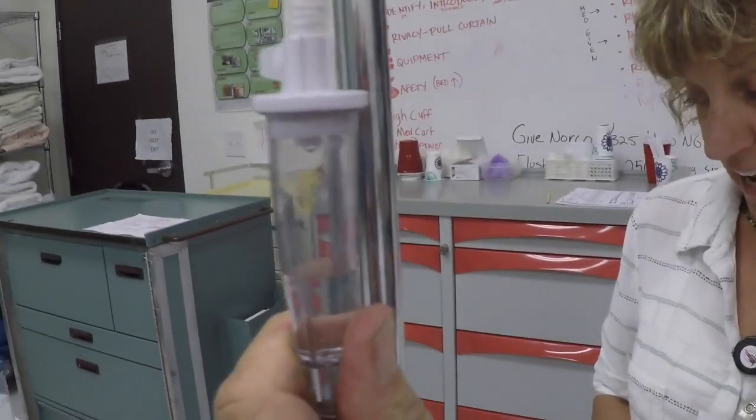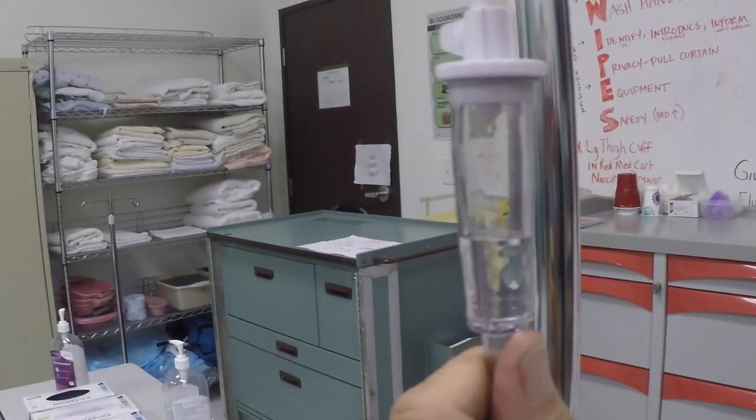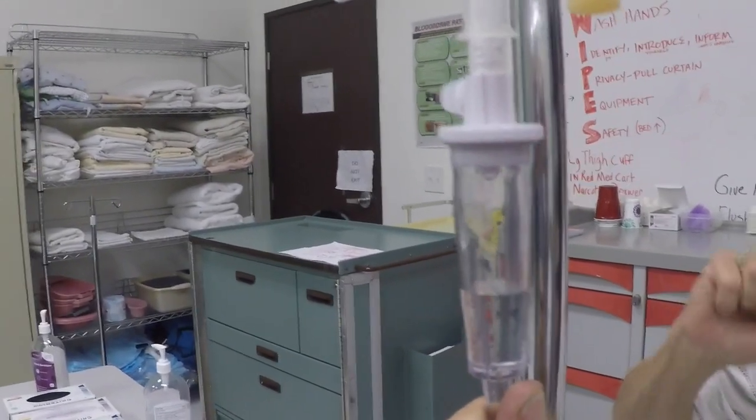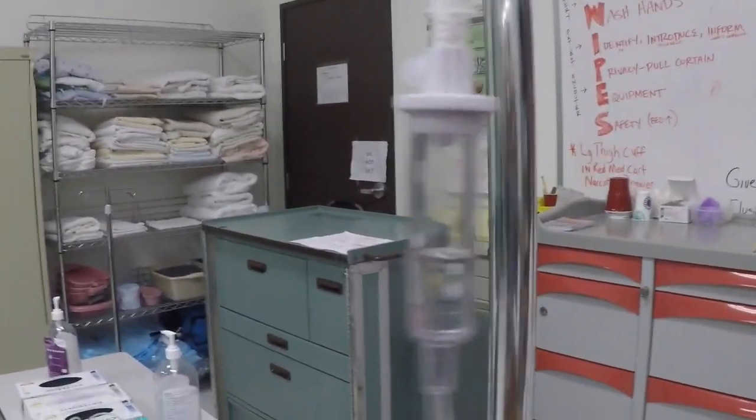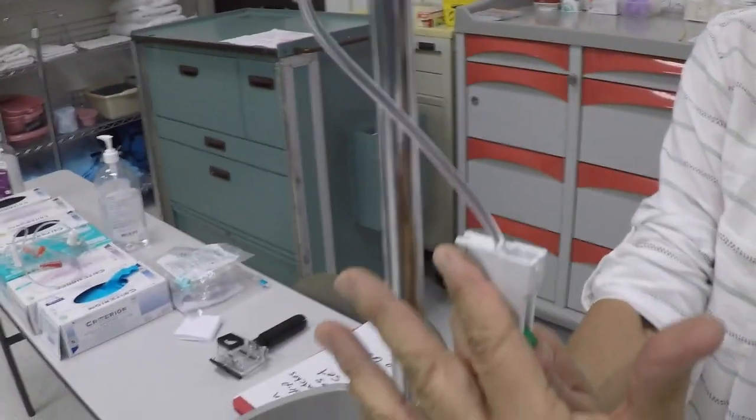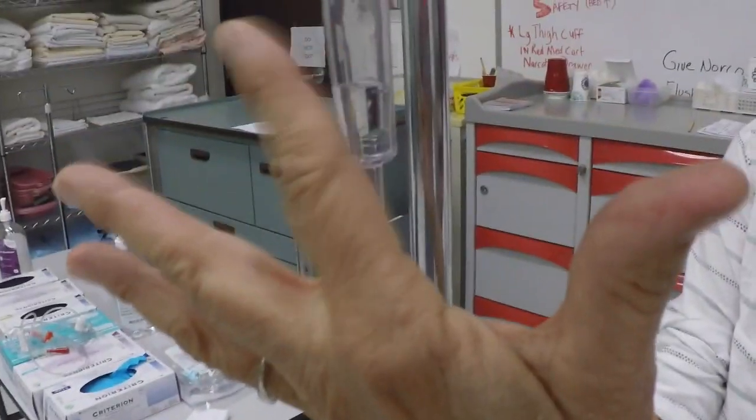So the drip factor is how many drops this tubing will deliver to make 1 ml. Some of the tubings are very different, so it's important if we have to set this up manually, if we don't have a pump, what our drip factor is.